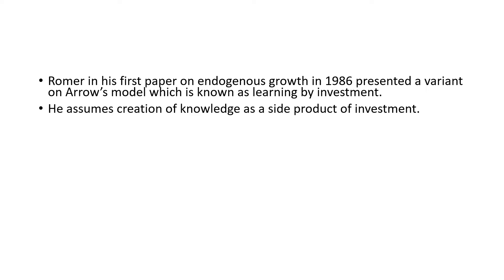This particular model put forward by Romer is all about learning by investment. Arrow's model was on learning by doing, but Romer's model is on learning by investment. Romer assumed that the creation of knowledge is actually a side product of investment, and in that way he could relate the creation of knowledge and investment.